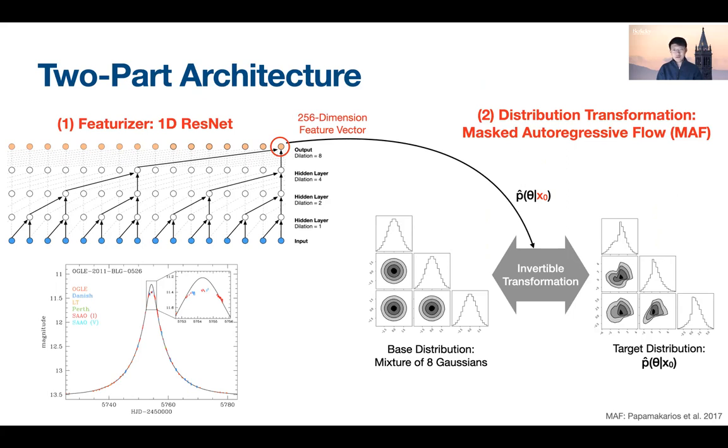The MAF then transforms a mixture of Gaussian-based distribution into the posterior so that one can generate discrete posterior samples simply by sampling from the mixture of Gaussian-based distribution. The flexibility of the MAF as well as the mixture of Gaussian-based distribution allows our approach to naturally adapt to multi-modal or degenerate solutions.